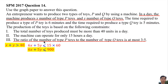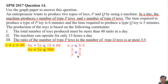The ratio of the number of type P toys to the number of type Q toys means x to y, at most less than or equal to 3 to 5. x to y can be written as x over y, and 3 to 5 as 3 over 5. Then we do cross multiplication and rearrange the positions of x and y.